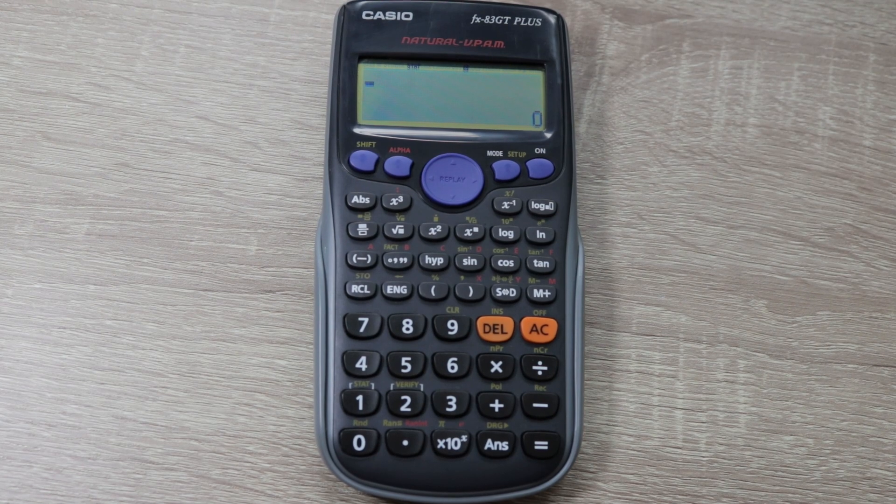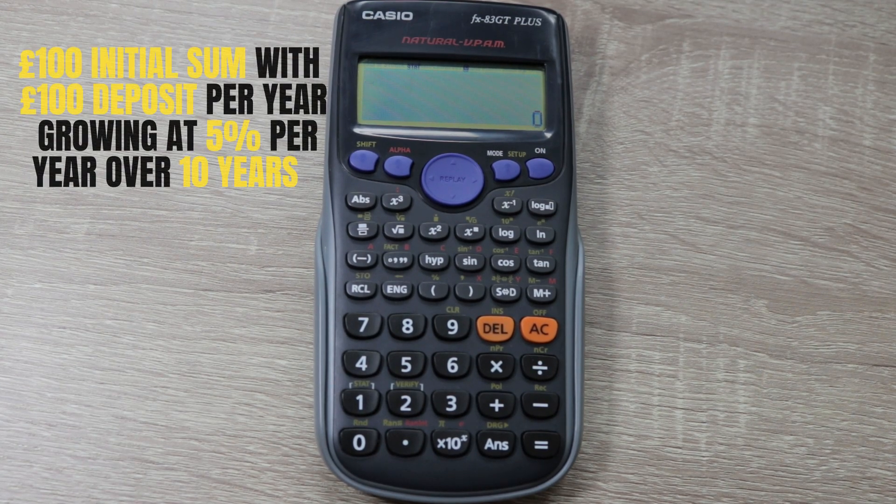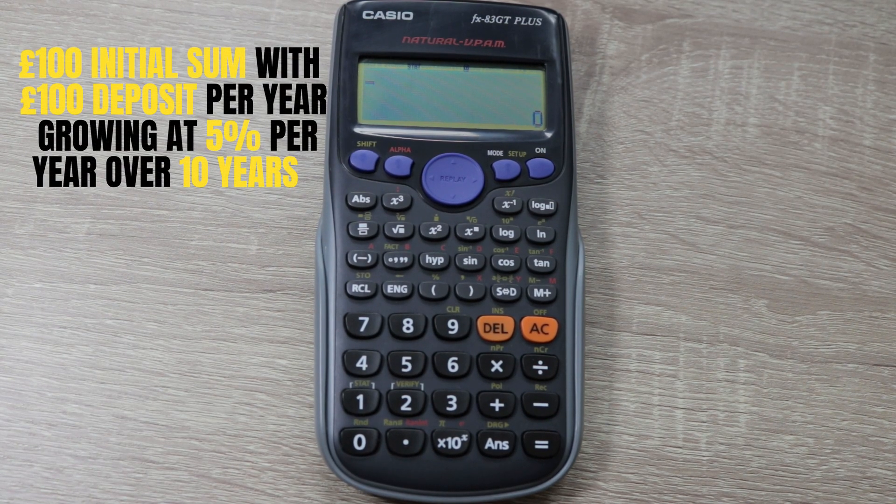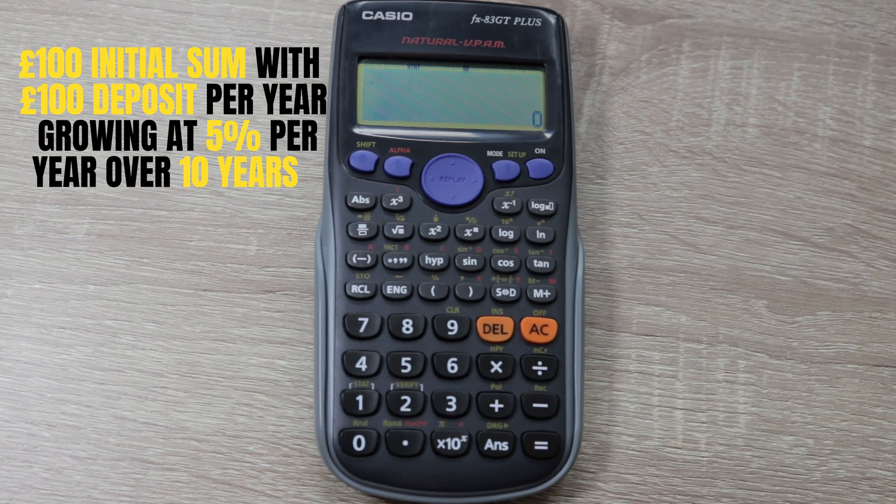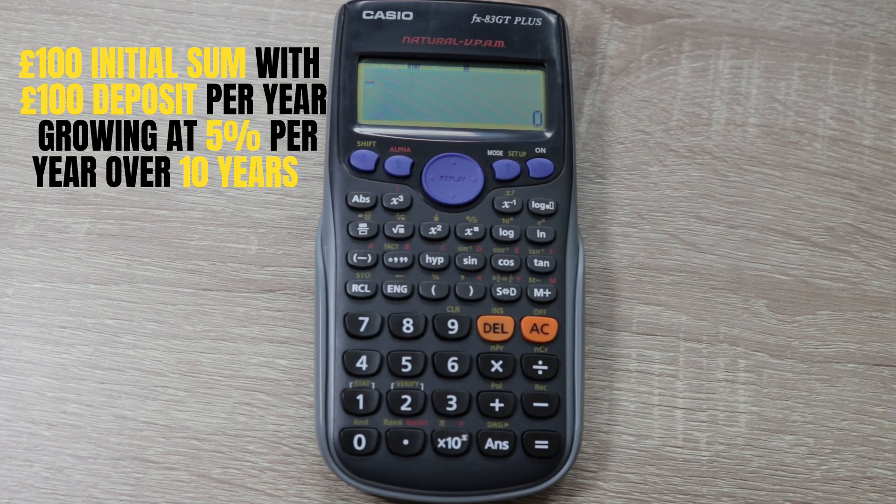In this next example we'll keep it really simple. We've got £100 starting deposit, and then we're going to invest £100 per year for 10 years, and again we've got a 5% growth rate.